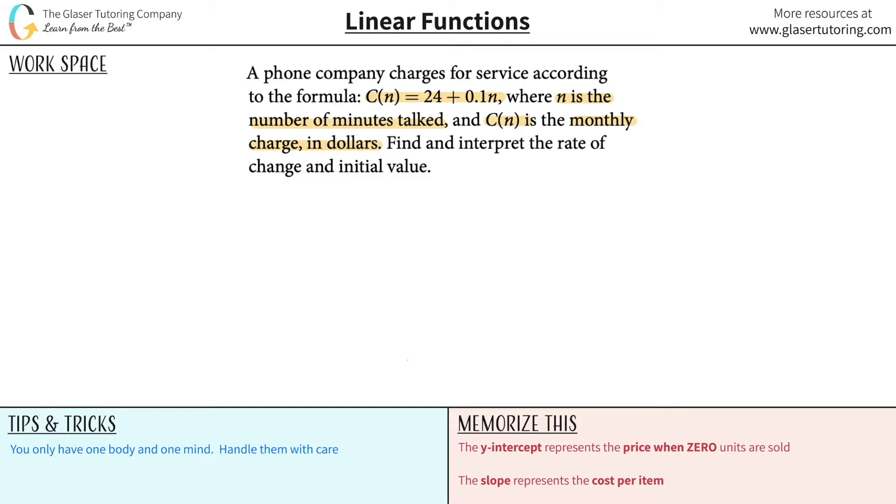Let's first start with the general equation of a linear line. Y is equal to mx plus b. Generally speaking, we know that m represents the slope and b represents the y-intercept.